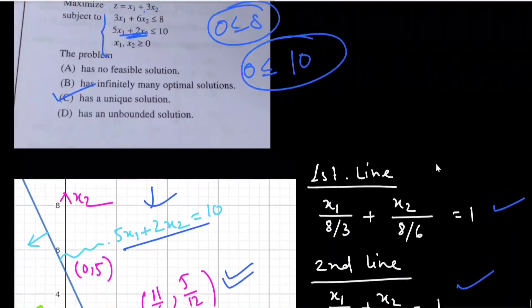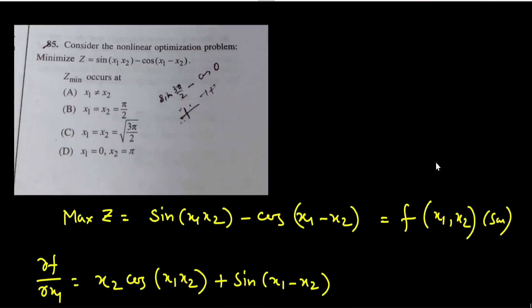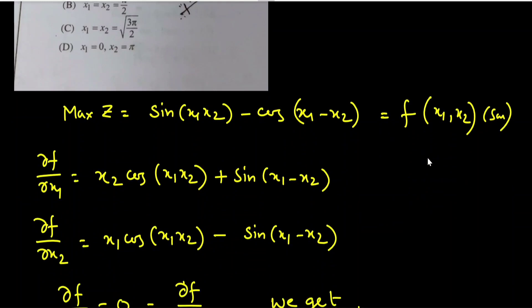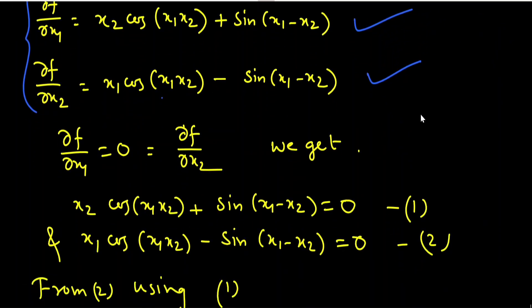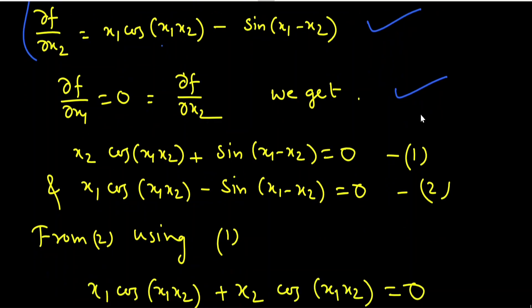The next question: consider the non-linear optimization problem, minimize z = sin(x₁x₂) − cos(x₁ − x₂). We treat this as f(x₁, x₂) and find partial derivatives. ∂f/∂x₁ = x₂·cos(x₁x₂) + sin(x₁ − x₂), and ∂f/∂x₂ = x₁·cos(x₁x₂) − sin(x₁ − x₂). Setting both equal to zero gives the system to solve.